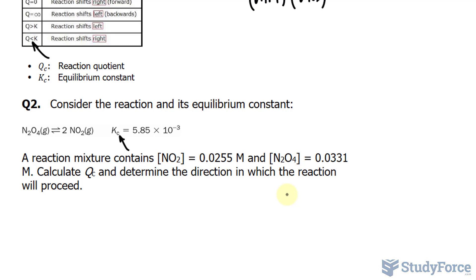Just as we did before, I'll compare the products to the reactants, their concentrations, and we've been given the concentration of NO2, that's our only product, 0.0255, and that will be raised to the power of 2 because of the coefficient, divided by... We're looking for Q C. The only reactant has a concentration of 0.0331, and that's not being raised to anything.